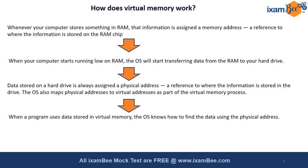When your computer starts and the RAM is running low — meaning its capacity is near exhaustion — the operating system will immediately start transferring data from the RAM to the hard drive to maintain enough free RAM for faster processing. Data stored on the hard drive is assigned a physical address, while data in RAM or with the CPU has a logical address.